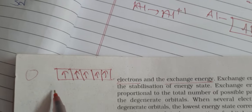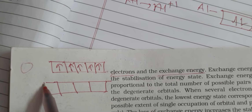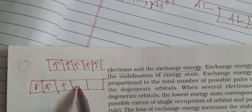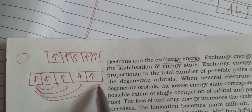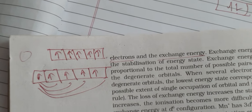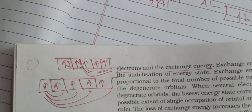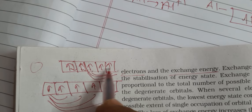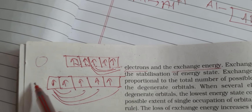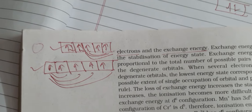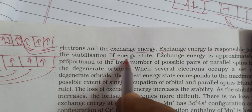Exchange energy: if electrons are arranged with maximum parallel spins, exchange energy is more, the system is more stabilized, and removal becomes difficult. But if exchange energy is only three, you can only exchange limited pairs. So ionization enthalpy will be more in the first case and less in the second case. Exchange energy is responsible for the stabilization of the energy state.